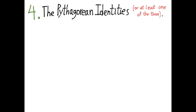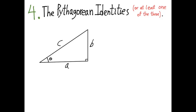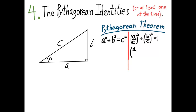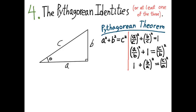Number four: the Pythagorean identities. Starting with the Pythagorean theorem for a right triangle with sides a, b, and c: c² = a² + b². Dividing every term by c² gives (a/c)² + (b/c)² = 1. Similarly you can divide every term by b² or by a², giving three less familiar-looking statements that are still expressions of the Pythagorean theorem. These six different ratios can be written as trigonometric functions of theta.